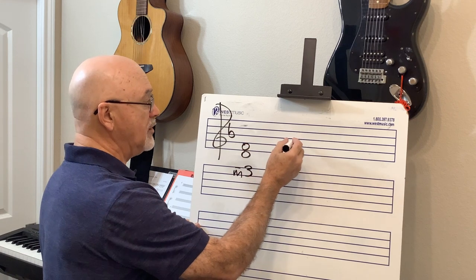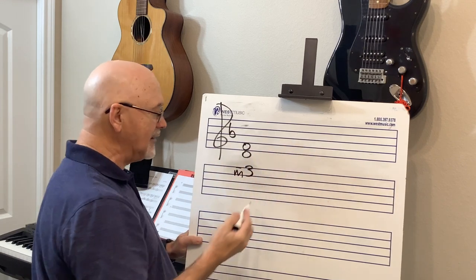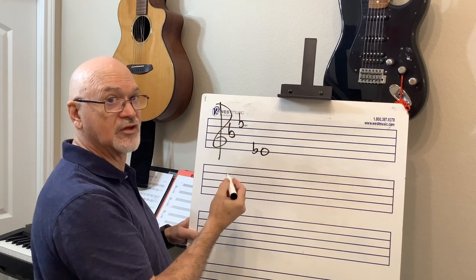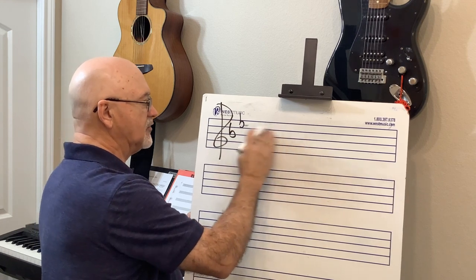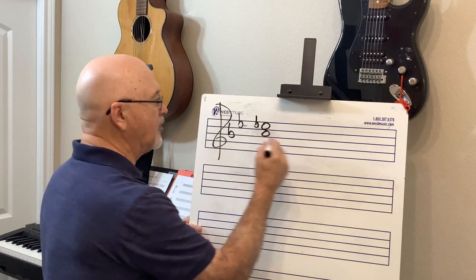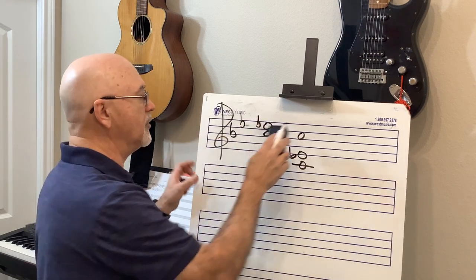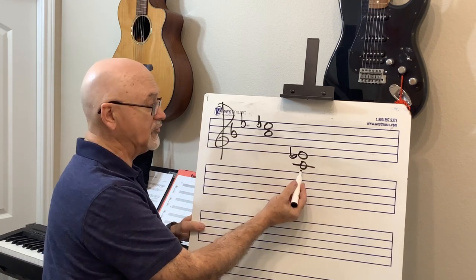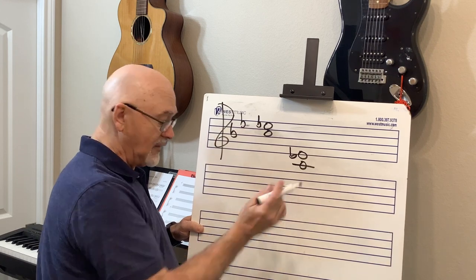Inverting intervals means we take one note and flip it. In the key of F major, the relative minor is D minor — they share the same key signature, just one flat: D, E, F, G, A, B-flat, C, D. Let's go E-flat — up a major sixth: E-flat to C. Now I flip E-flat up above C, giving me C to E-flat — a minor third. That's how inverting intervals works.